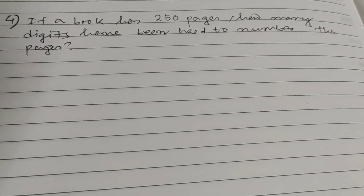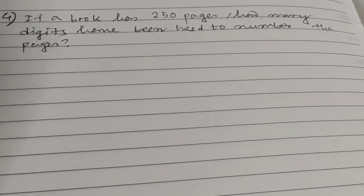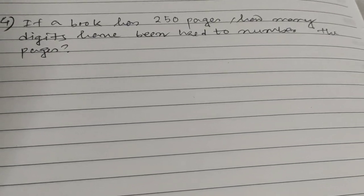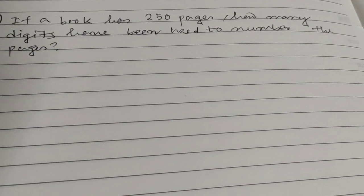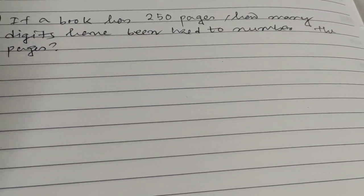Hi friends and students, this is question number 4 for the number properties playlist. The question is: if a book has 250 pages, how many digits have been used to number the pages?